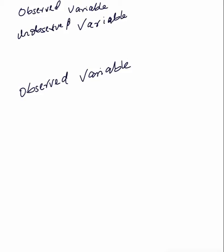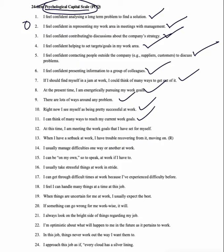So the observed variables, as you can see, are those questions in your questionnaire — in simple terms. The other variables are what you are trying to measure; we also call them latent variables. Whenever you see 'observed variable,' they are talking about questionnaire questions. 'Latent variable' or 'unobserved variable' simply refers to what you are trying to measure.